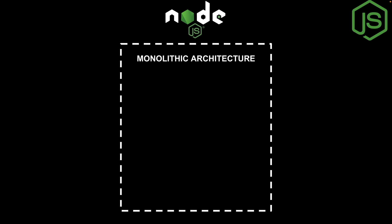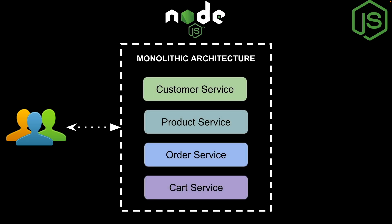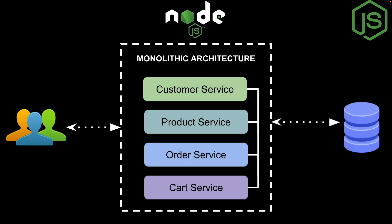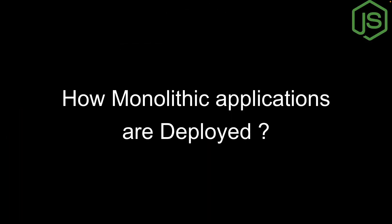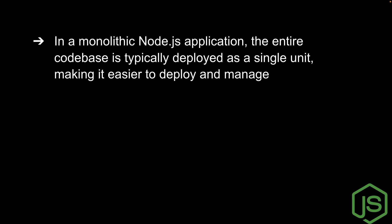Let's understand this with a diagram. We have a monolithic architecture-based application being used by users. This application offers services like customer service, product service, and cart service, and all these services are very tightly coupled — for example, customer service will call the order service to get orders of a particular customer, or cart service to check a customer's cart. All these services connect to a single database.